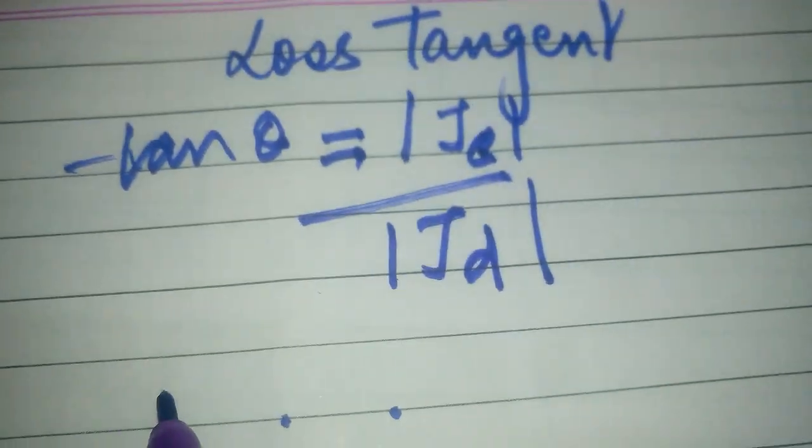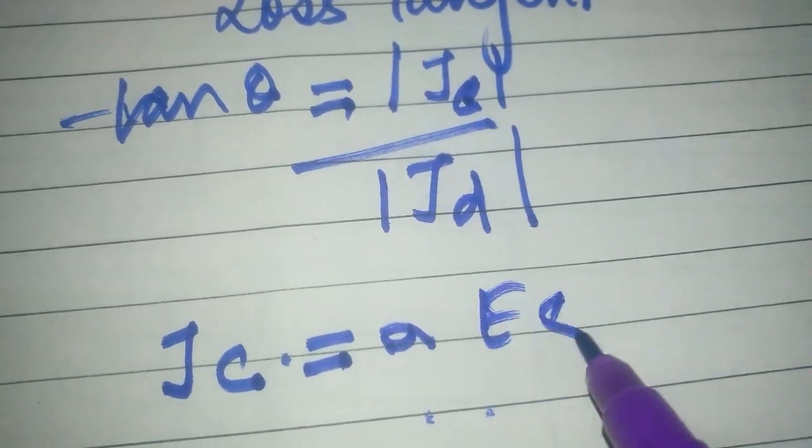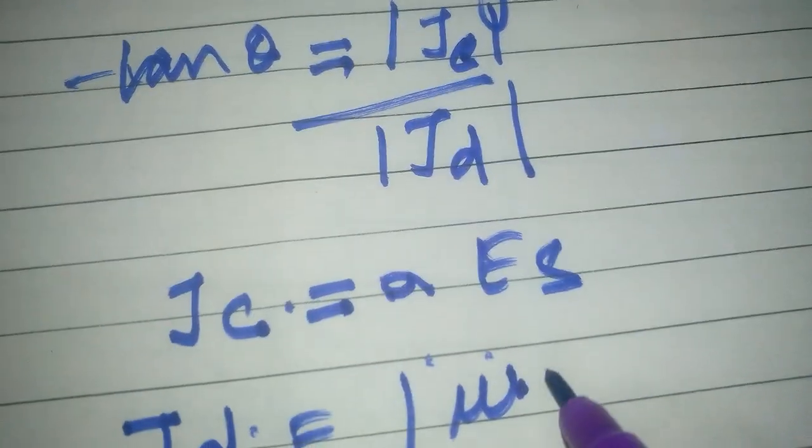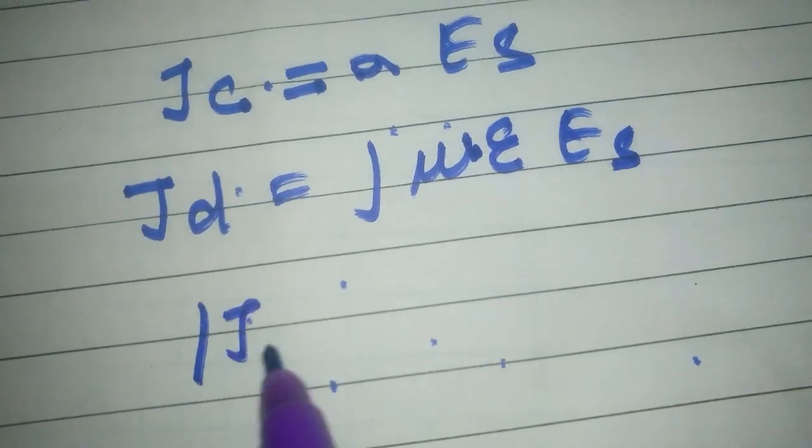We know that conduction current density is sigma Es, and displacement current density is J omega epsilon Es. On taking modulus of both values, what do we get?